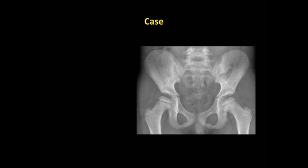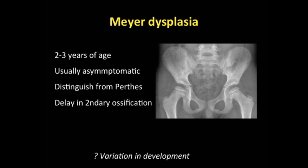Here's something slightly different. Both sides of the femoral heads are affected — we have a little bit of flattening and irregularity of both femoral head epiphyses. This often turns out to be Meyer's Dysplasia, a diagnosis of exclusion. It often presents in young kids around two to three years of age. They're usually asymptomatic, discovered incidentally on plain film. It can run in families, and it's important to distinguish from Perthes disease because usually they do quite well with just observation. Usually they're followed by a pediatric orthopedist, just to make sure.